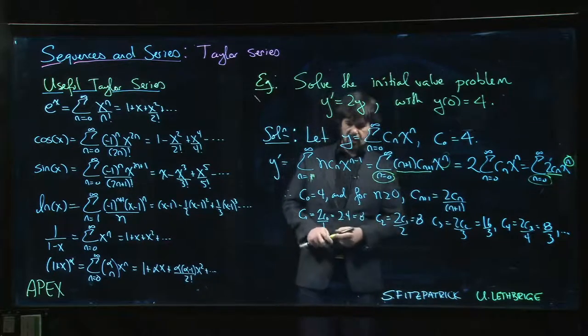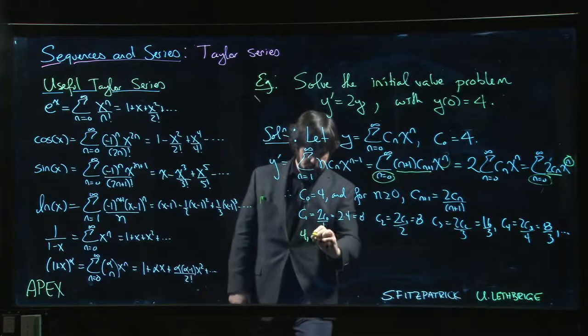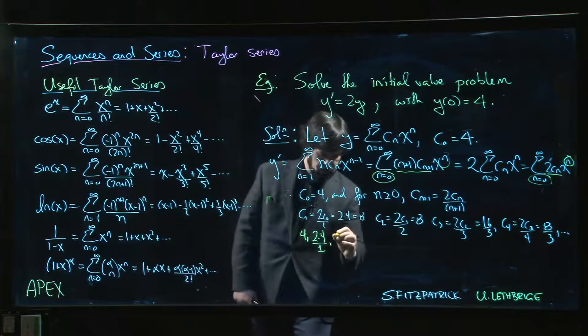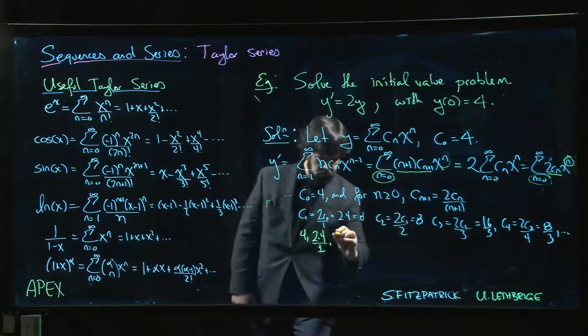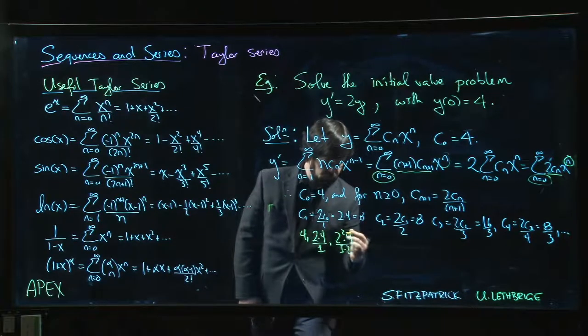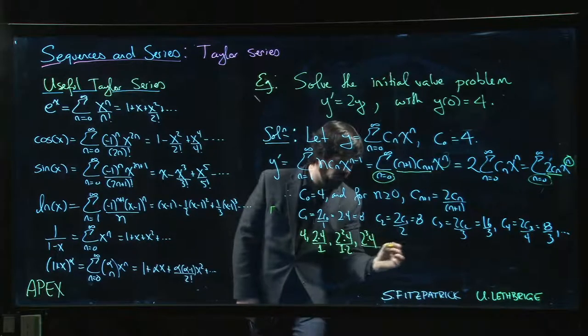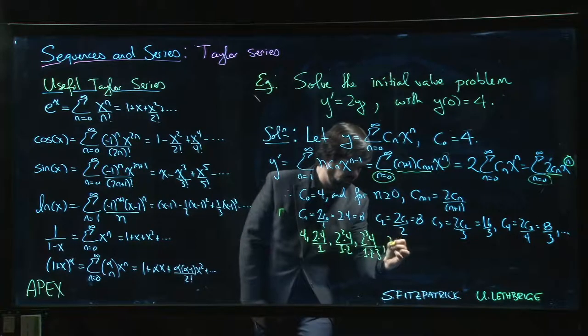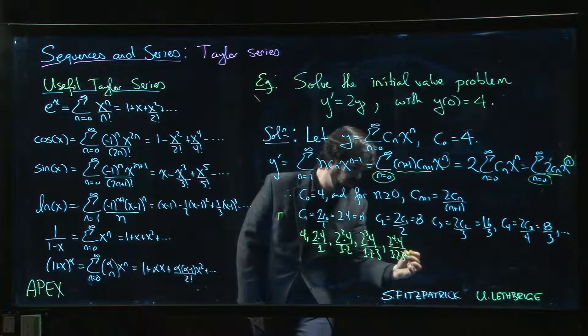So let's start thinking about what these actually look like. We have c_0 is 4, c_1 is 2 times 4 divided by 1, c_2 is going to be 2 times 2, so 2 squared times 4 over 1 times 2. Then we get 2 cubed times 4 and we divide by 3, so 1 times 2 times 3. Then we multiply by 2 again, 2 to the 4 times 4 over 1 times 2 times 3 times 4.